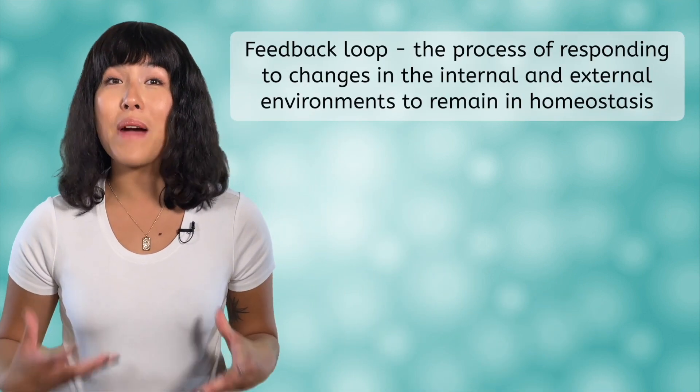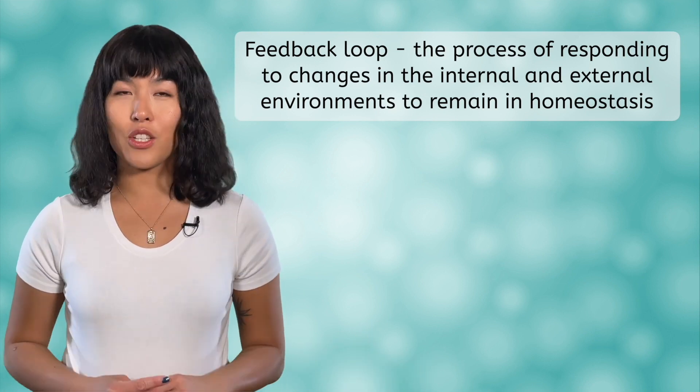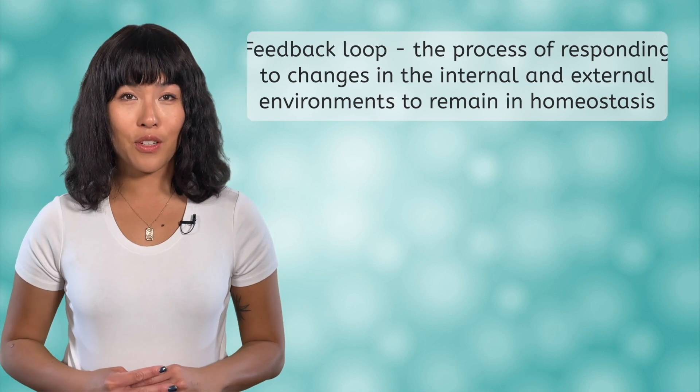98.6 degrees. When any of these functions are not balanced, it can cause illness and have negative effects on your body. How does your body achieve this balance? As you can imagine, your internal and external environment is always changing. Human bodies use a process called a feedback loop to keep everything in check. The most common feedback loop is a negative feedback loop.